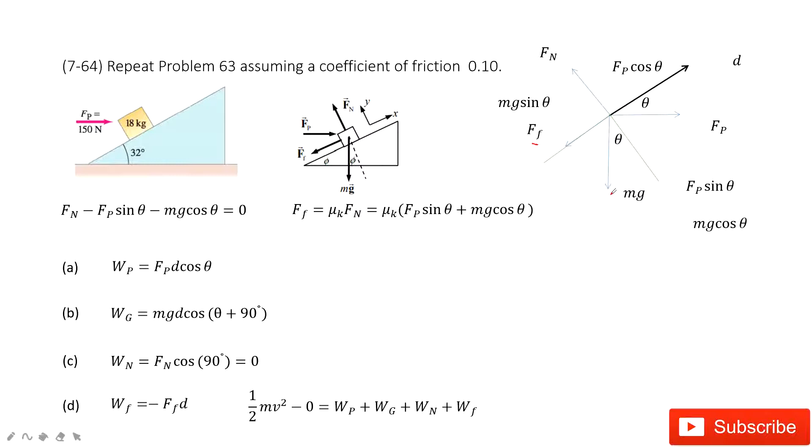We project the gravity at the x-component and y-component. This is x-component, this is y-component. So this is mg cosine theta, this is mg sine theta. And also, we need to project Fp in x-component and y-component. In x-component, Fp cosine theta. In y-component, Fp sine theta.